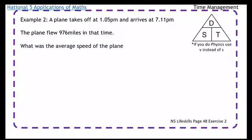Okay, example 2. Plane takes off at 5 minutes past 1 and arrives at 11 minutes past 7. The plane flew 976 miles. What was the average speed of the plane? So this time we're looking for the average speed. So cover our S in your triangle. It's S equals D over T.